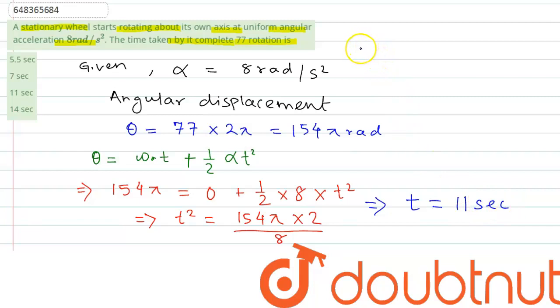So the third option which says 11 seconds. So in 77 rotations, it will take 11 seconds of time. Thank you.